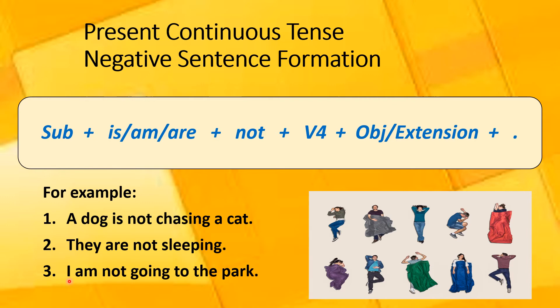Here is the third sentence. Your affirmative sentence was: I am going to the park. You will have noticed that after the auxiliary verb or the helping verb, I have added not in the negative sentences of present continuous tense.